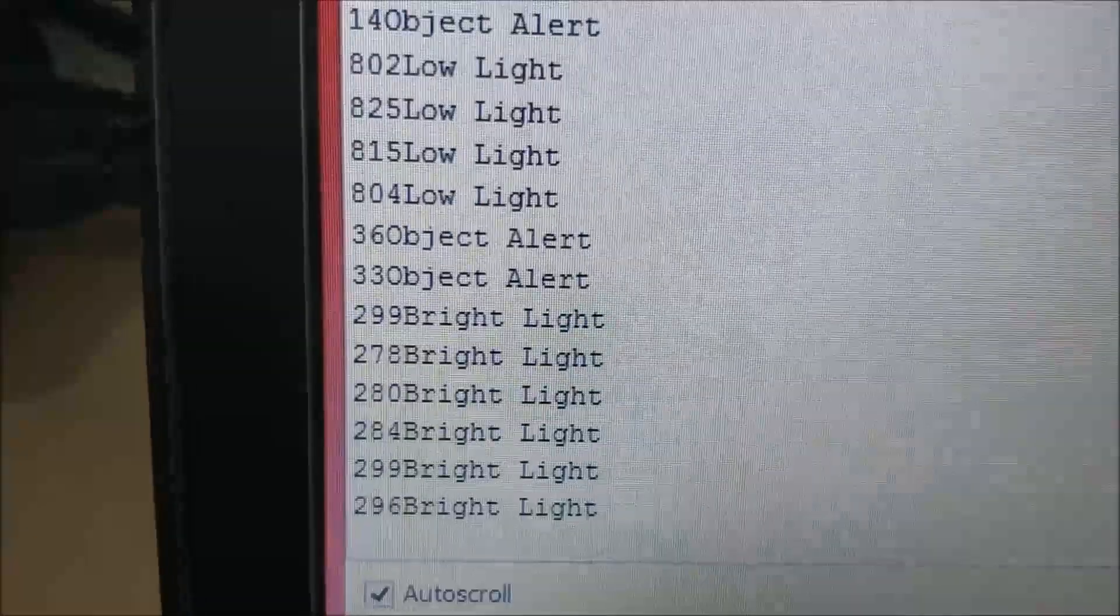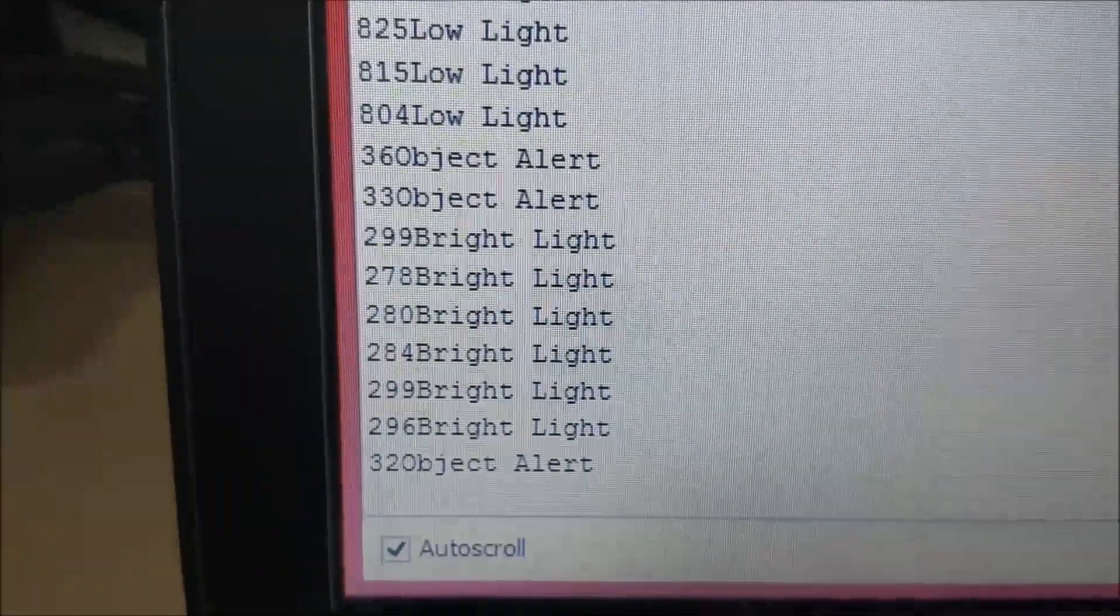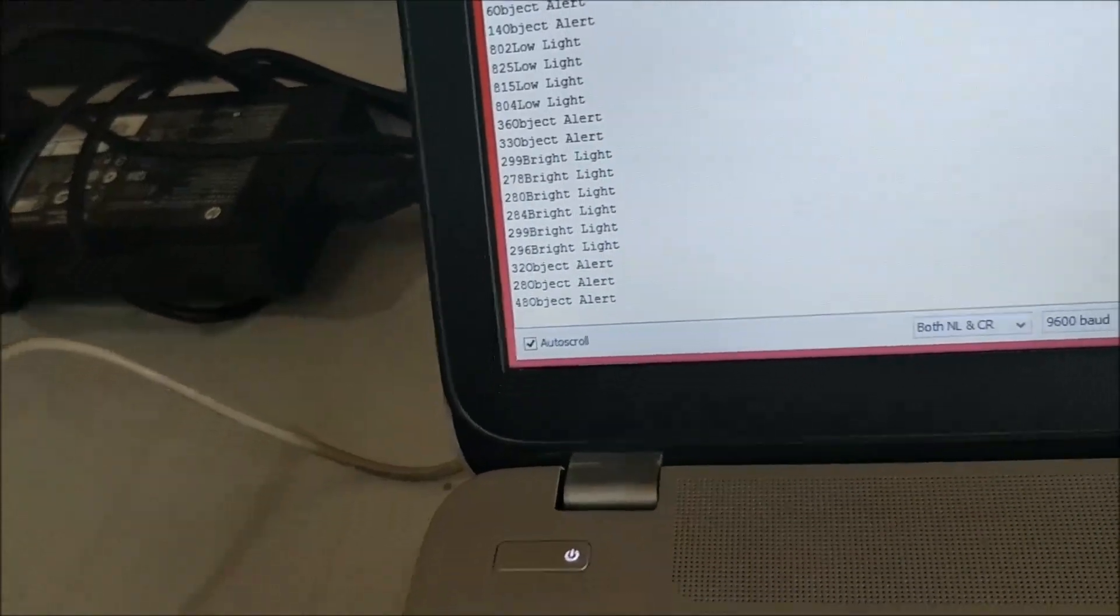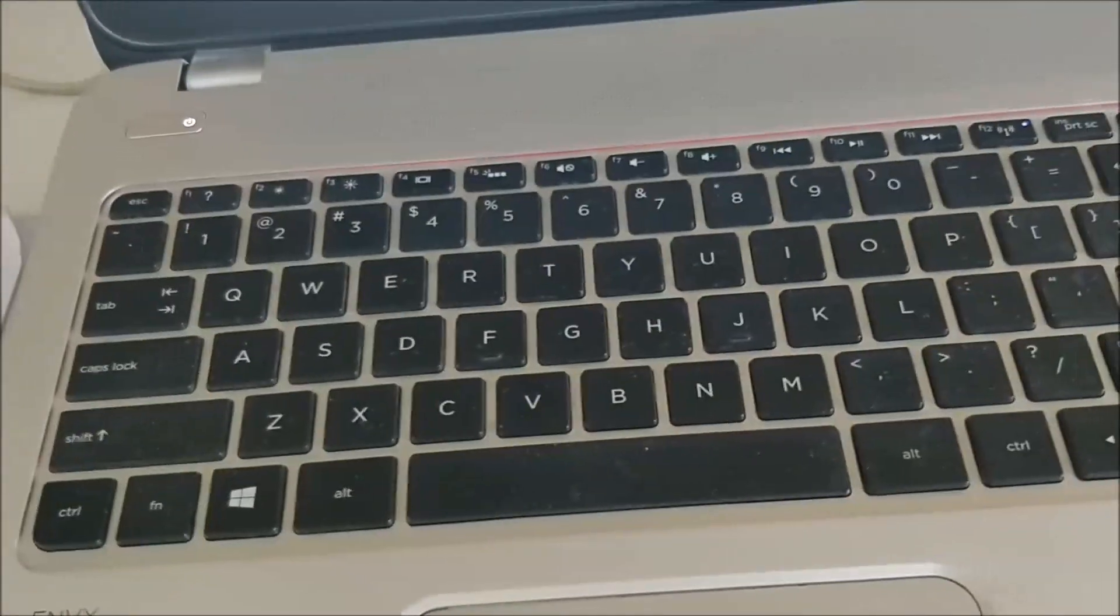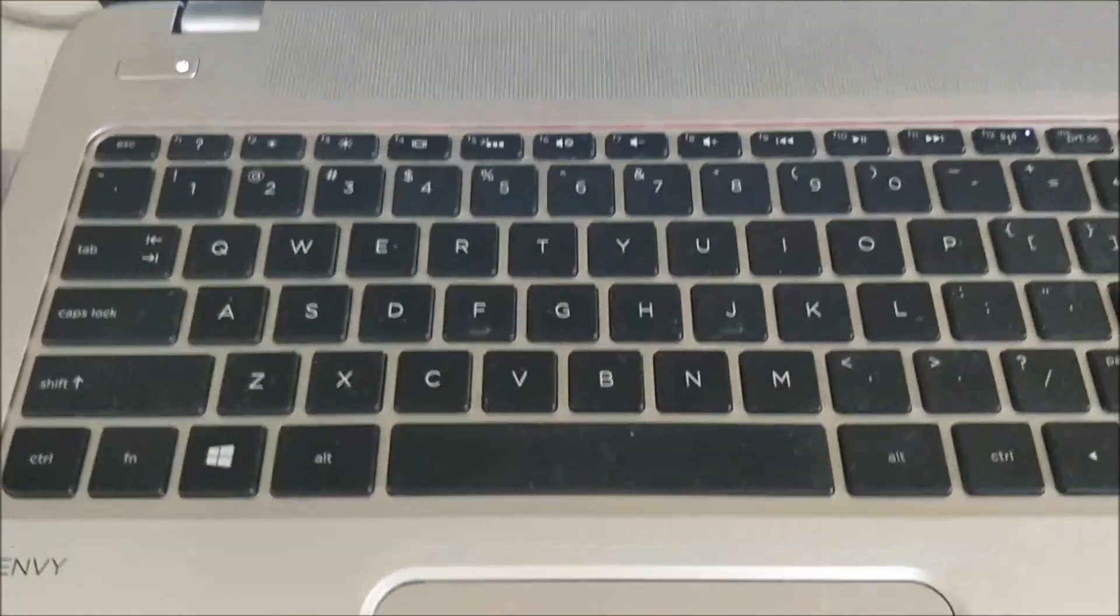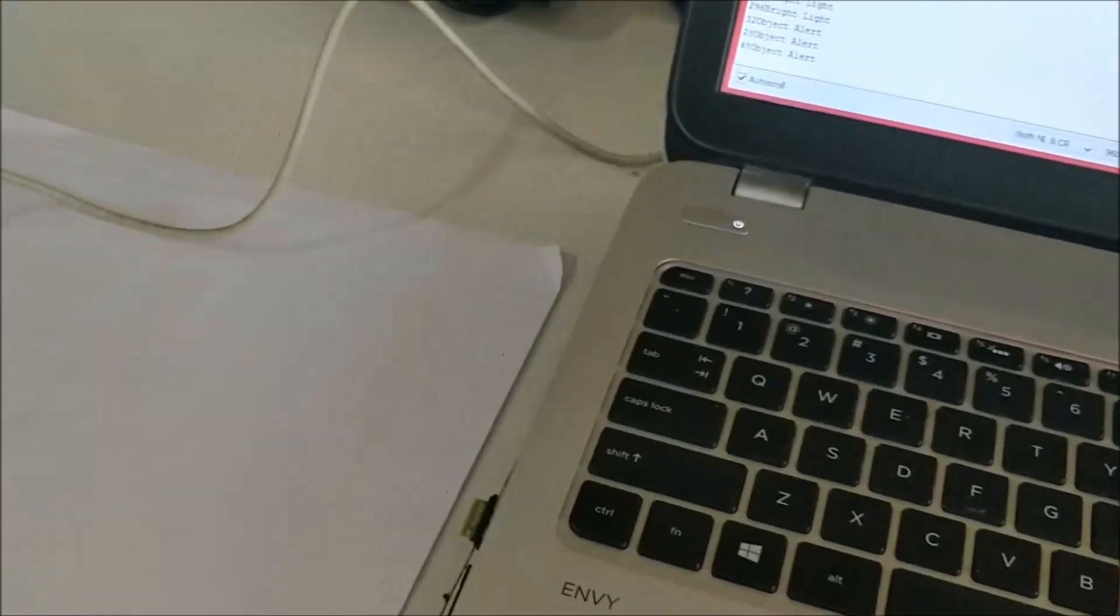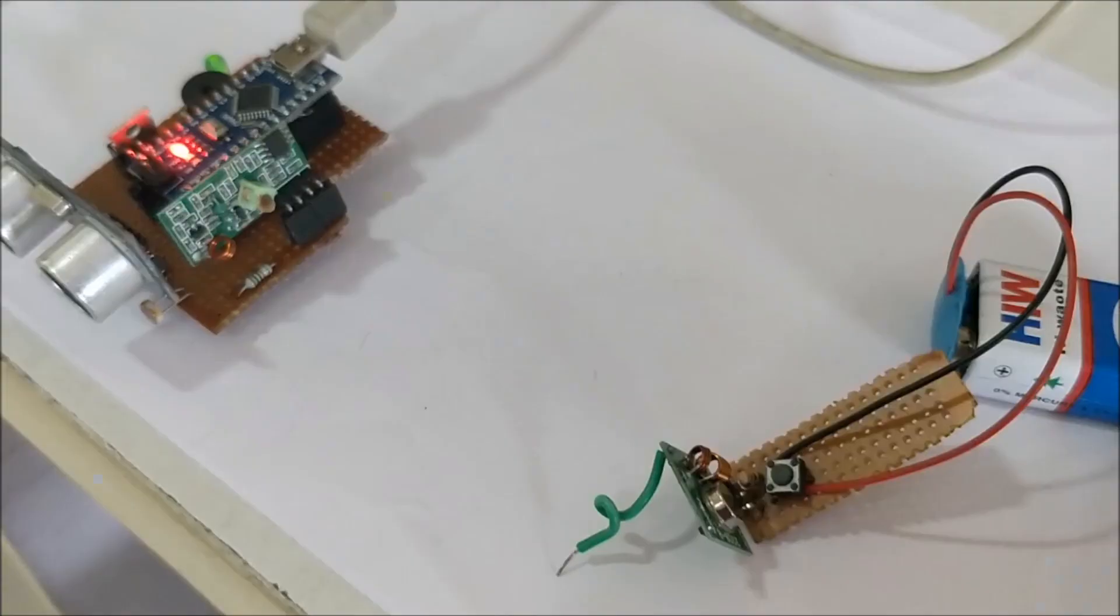As you can see, the serial monitor says it's bright light and you can hear this tone. The blind man can identify if he is in a dark room or bright room. Of course, you can program it to modify the intensity threshold and change the beep sound. Now let's see how the remote control works.